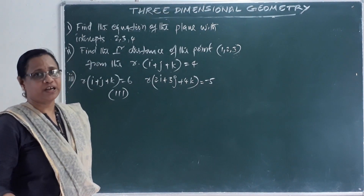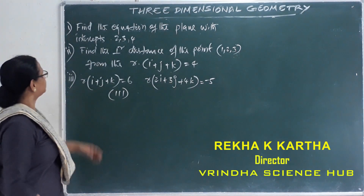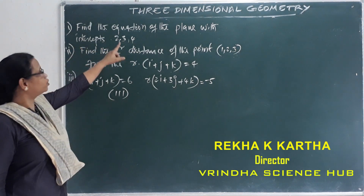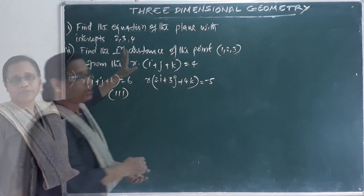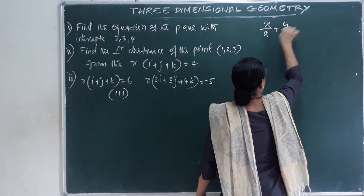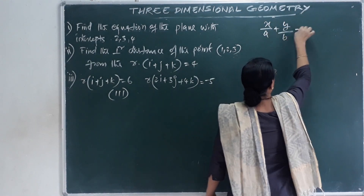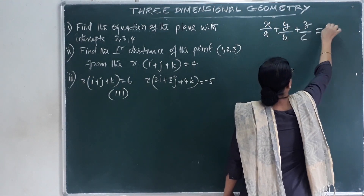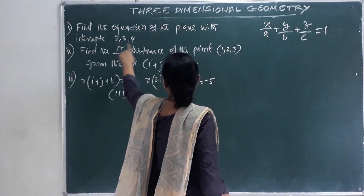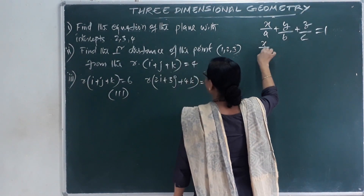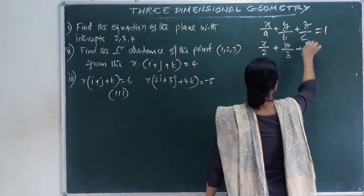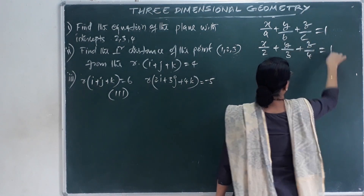Let us ask the plane questions. First question: find the equation of the plane with the intercepts 2, 3, 4. Intercept form is x/a + y/b + z/c = 1. Substituting a=2, b=3, c=4: x/2 + y/3 + z/4 = 1.